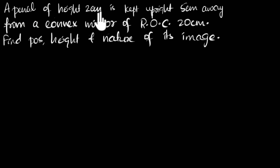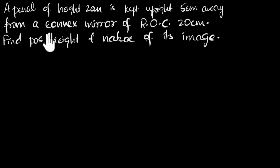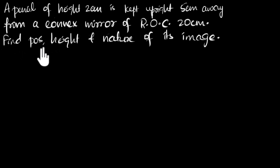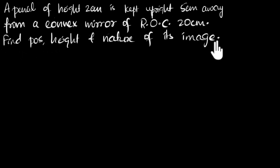A pencil of height two centimeters is kept upright five centimeters away from a convex mirror of radius of curvature 20 centimeters. Find the position, height, and nature of its image.